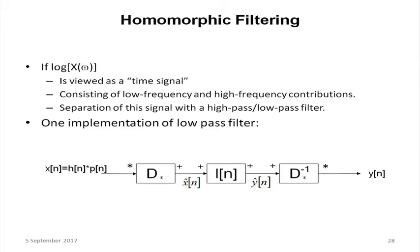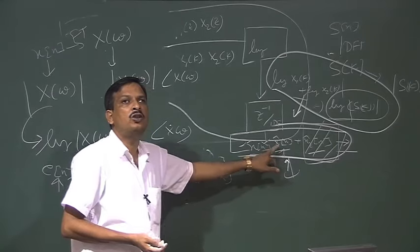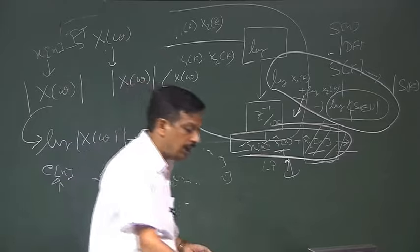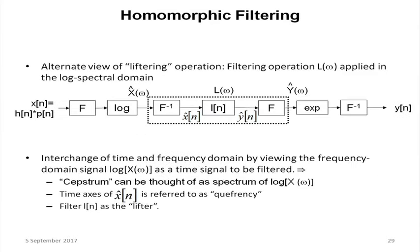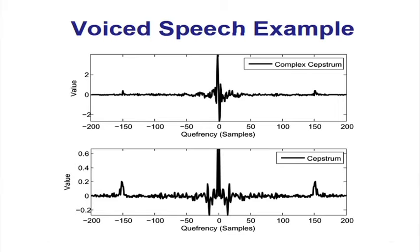For homomorphic filtering: the cepstral domain signal has to be passed through a filter to eliminate x̂2(n). I treat this as a time signal, and this signal is in a domain that is neither exactly frequency domain nor exactly time domain. It is called the quefrency domain — Q-U-E-F-R-E-N-C-Y. Low quefrency represents slowly varying components; high quefrency represents fast varying components. The removal of unwanted components by filtering in the cepstral domain is called liftering — instead of filtering, we say liftering.